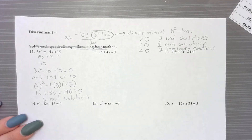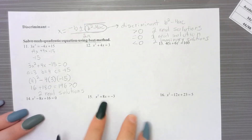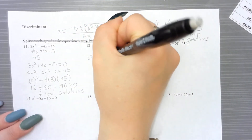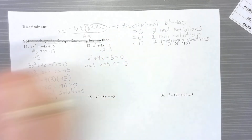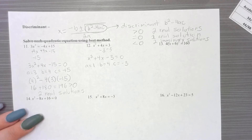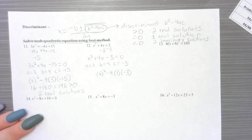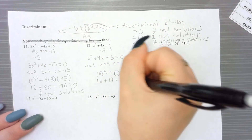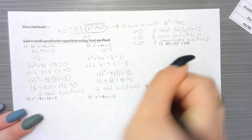For number 12, we move 3 over to get x squared plus 4x minus 3 equals 0. Identifying a which is 1, b which is 4, and c which is negative 3. We do b squared minus 4ac: 4 squared minus 4 times 1 times negative 3. That gives 16 plus 12 equals 28, which is bigger than 0. So this one also has two real solutions.